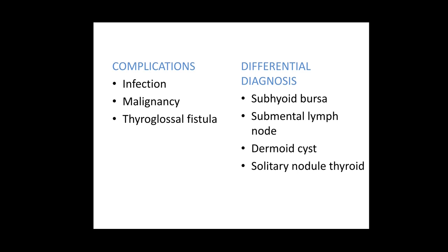The differential diagnosis includes other swellings in the midline of the neck. Common ones are the submental lymph node, sublingual dermoid cyst, irregular dermoid cyst, subhyoid bursa, solitary nodule of the thyroid, and lipoma, among others.